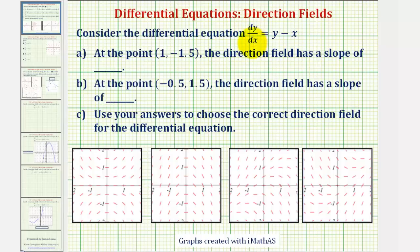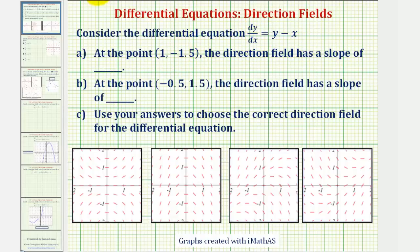Consider the differential equation dy/dx equals y minus x. At the point (1, -1.5), the direction field has a slope of what value? The direction field would have a slope that's the same as the value of dy/dx, or the derivative function at this point, (1, -1.5).